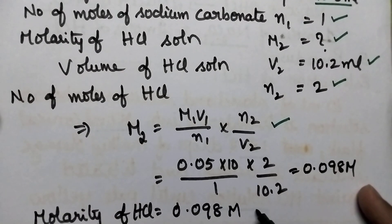Finally the molarity of HCl is obtained as 0.098 molar.